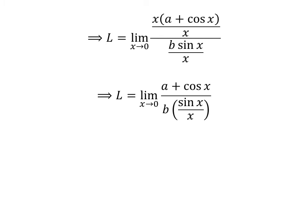Cancelling out the common factors in the numerator and denominator in each fraction, we get the limit L is equal to (a + cos(x)) over b times (sin(x)/x) as x approaches 0.